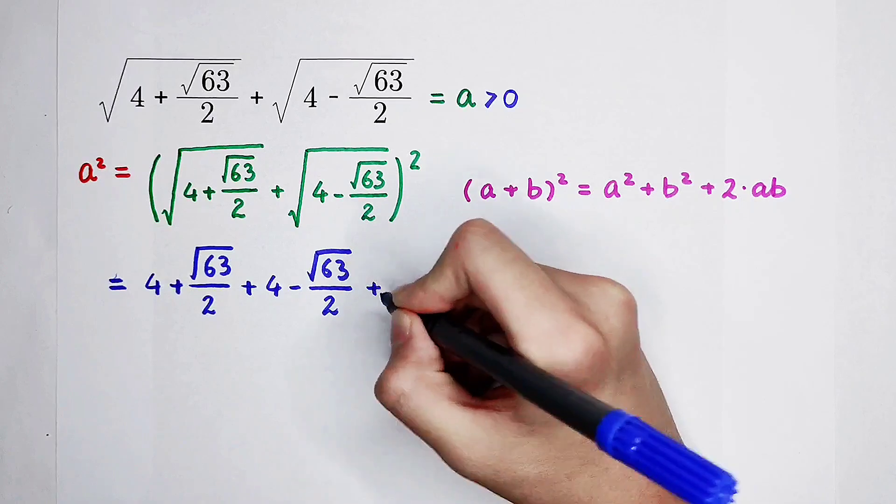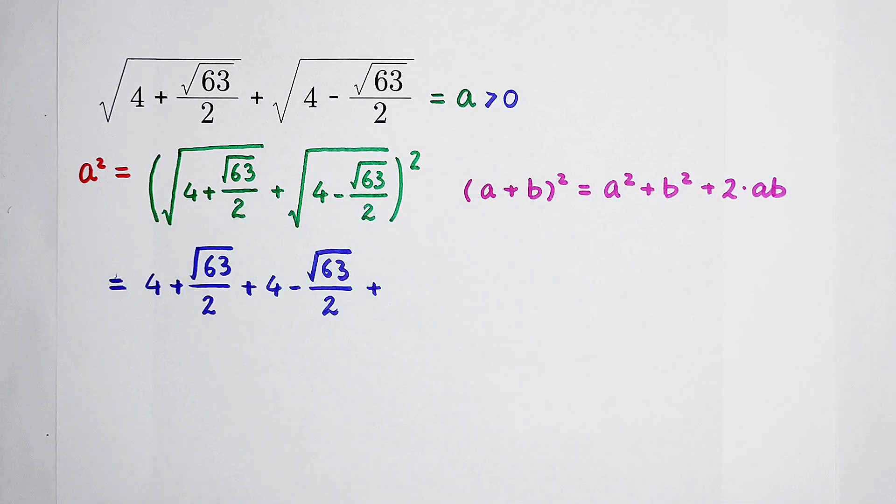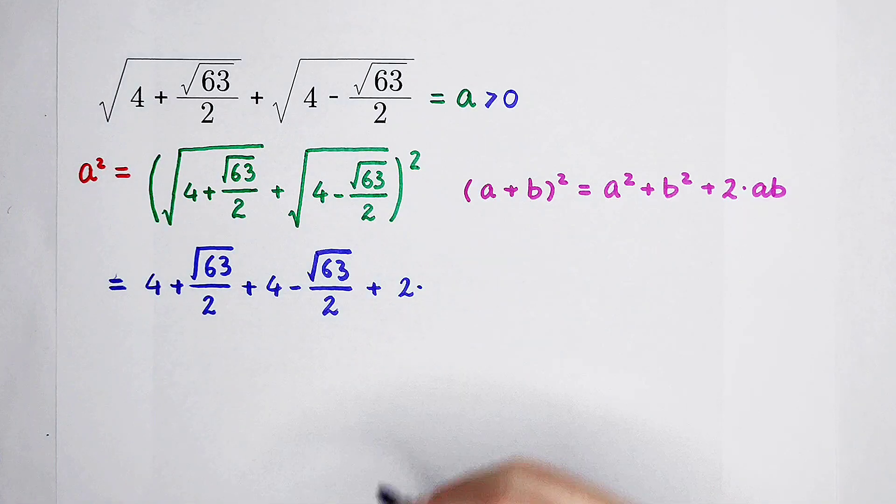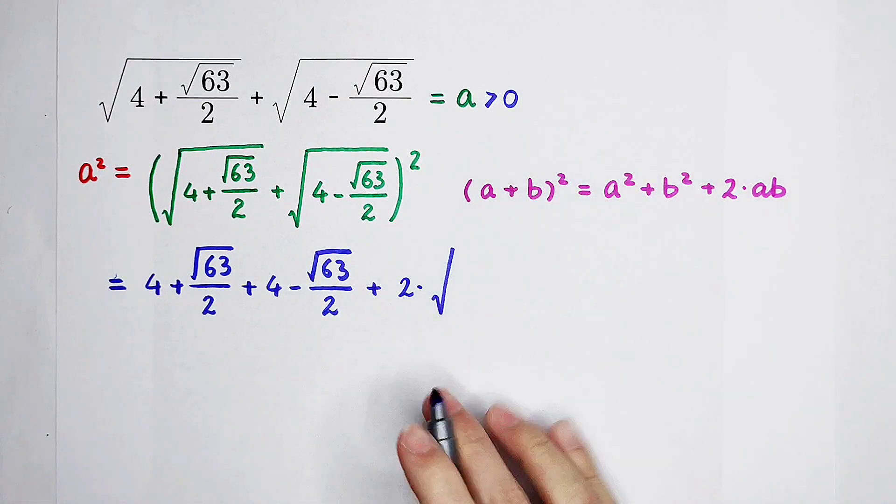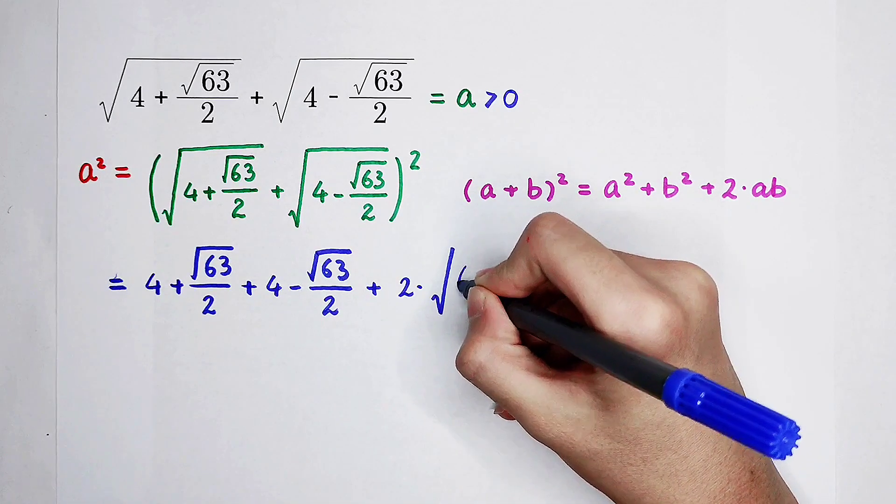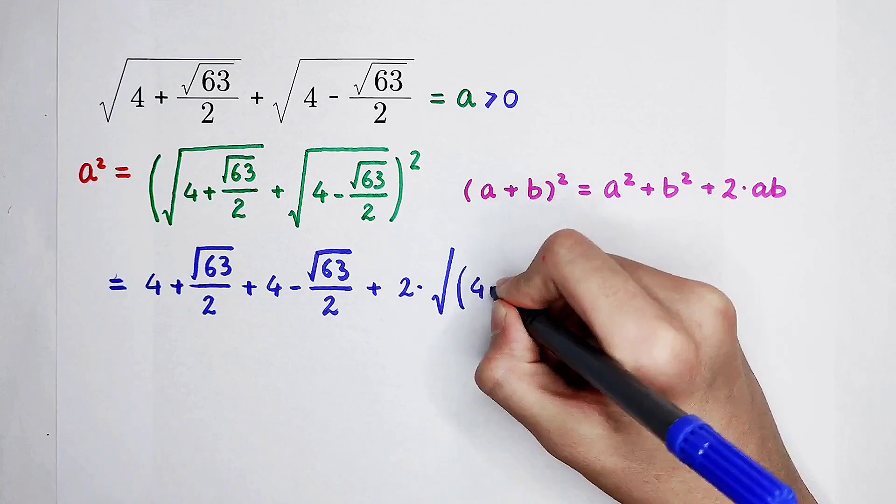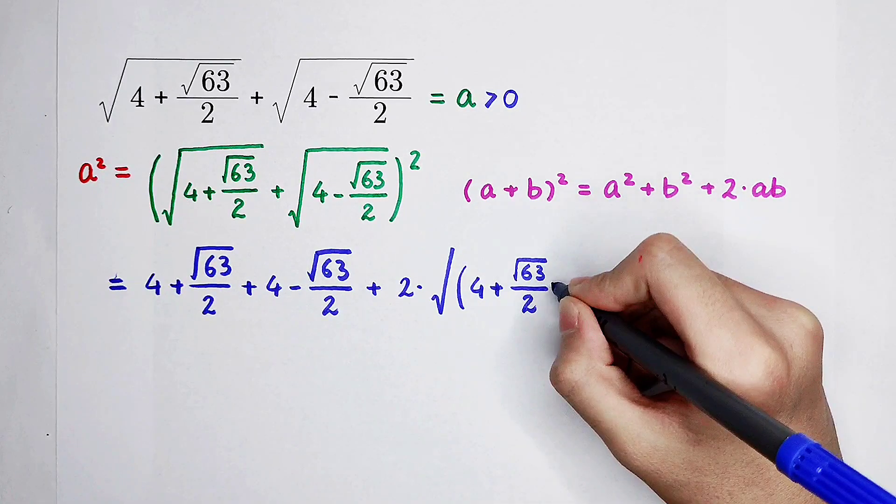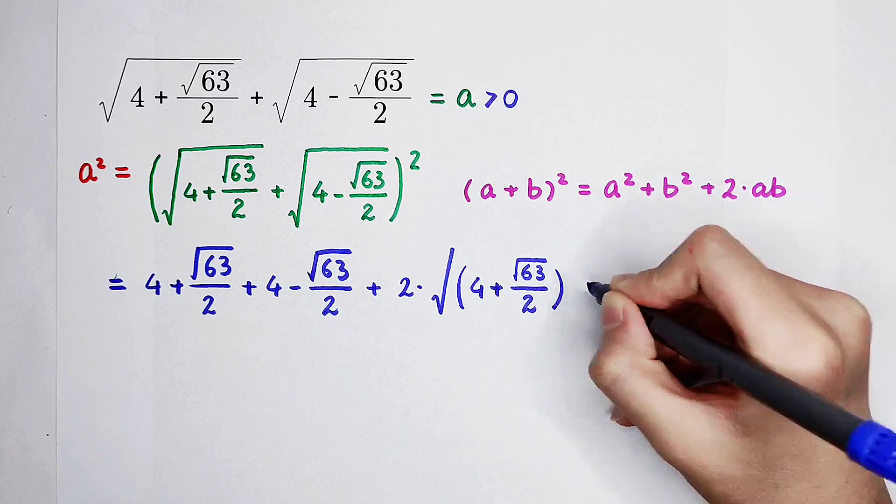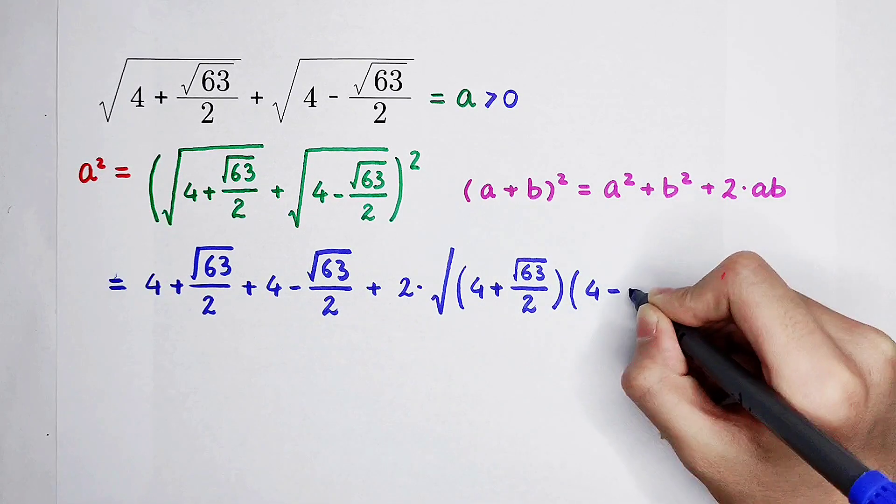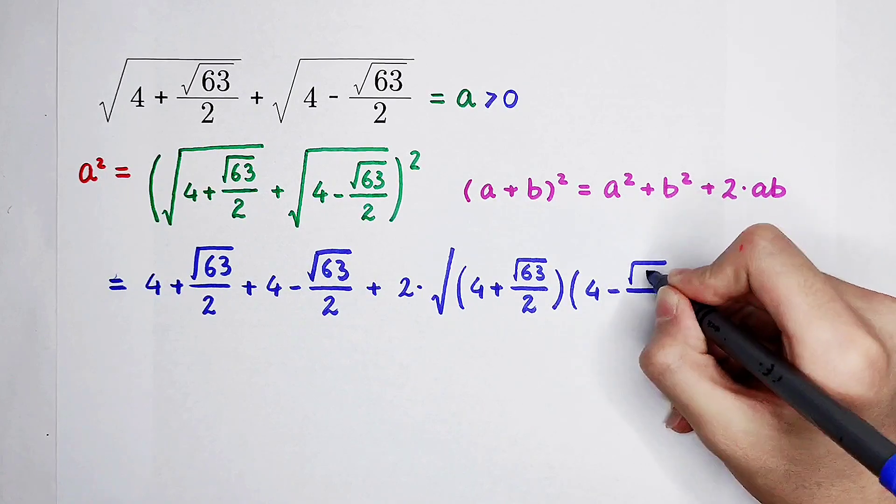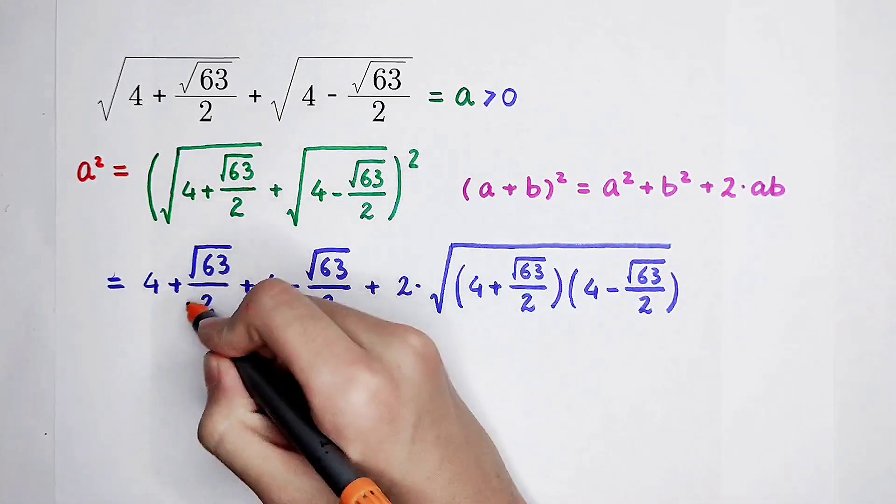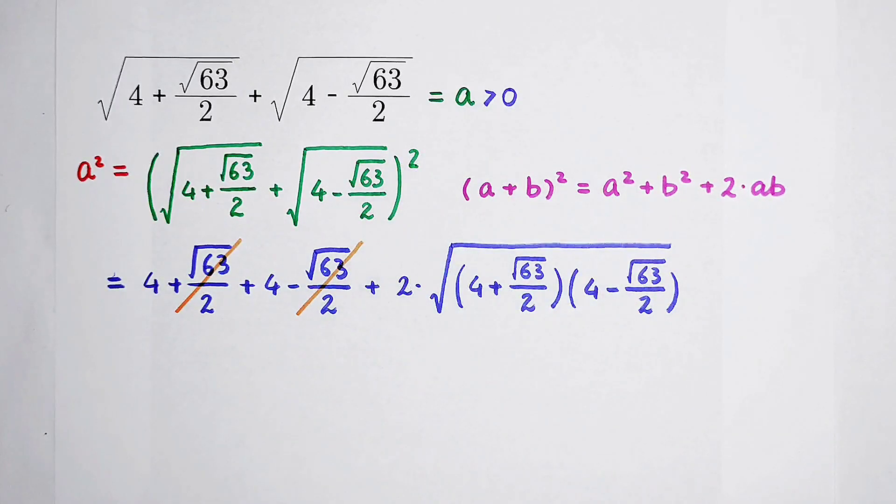And then we have to add 2 times ab. So, it is 2 times square root of a times square root of b is equal to square root of a times b. So we just need one square root. And then, what's under the square root? It is 4 plus square root of 63 over 2, and then times 4 minus square root of 63 over 2. Very good. Positive this, negative this. The sum of them is equal to 0, so cancel.